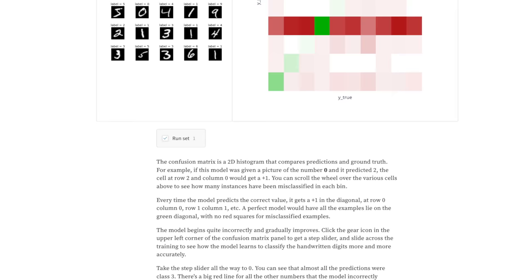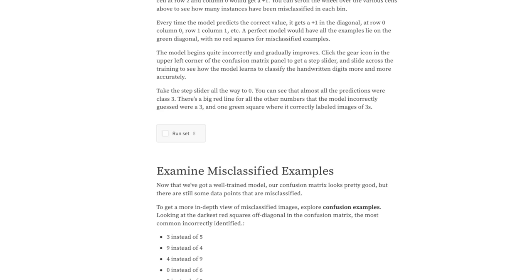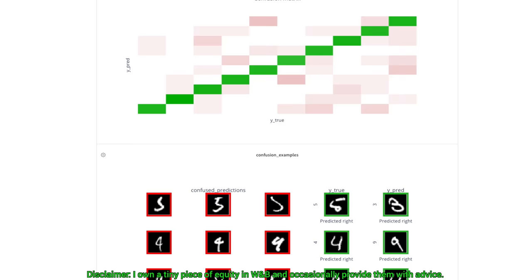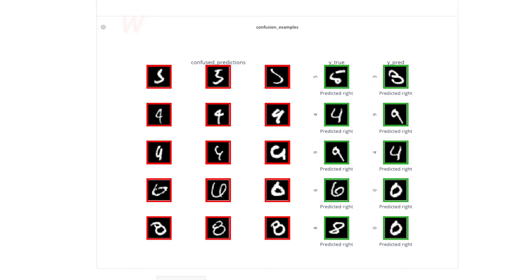Weights and Biases provides tools to track your experiments in your deep learning projects. Their system is designed to save you a ton of time and money, and it is actively used in projects at prestigious labs such as OpenAI, Toyota Research, GitHub, and more. And the best part is that Weights and Biases is free for all individuals, academics, and open source projects.